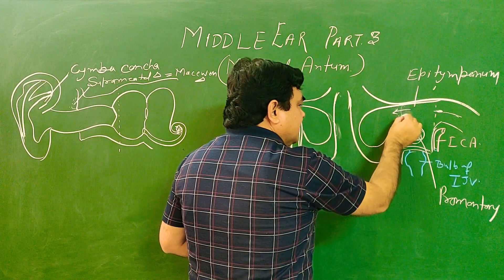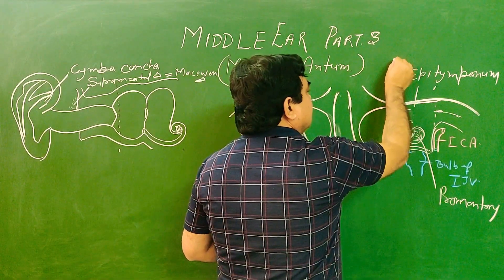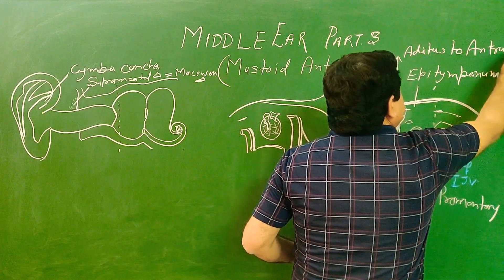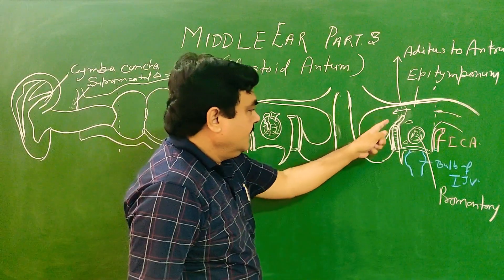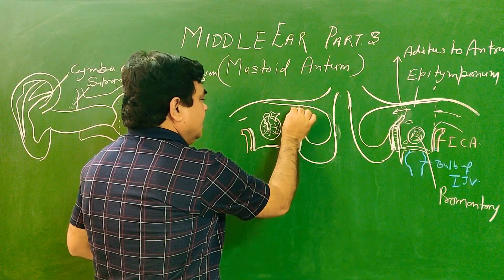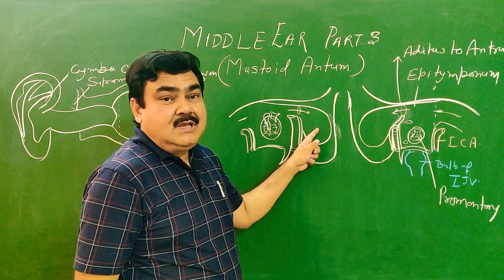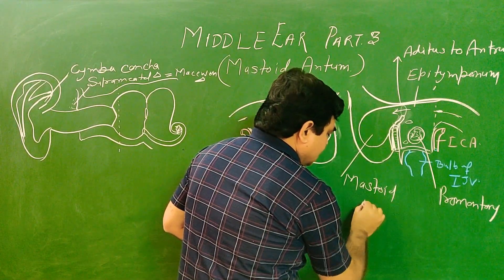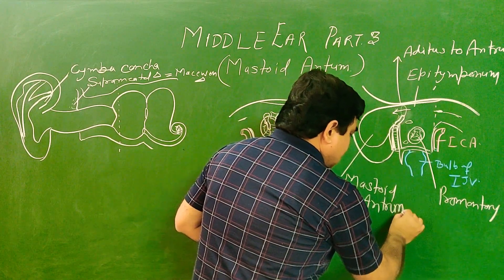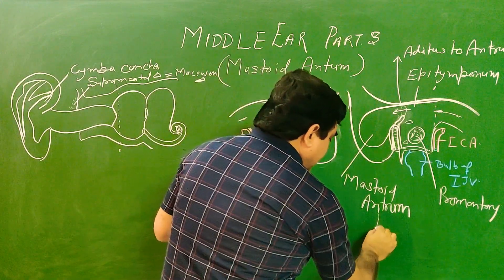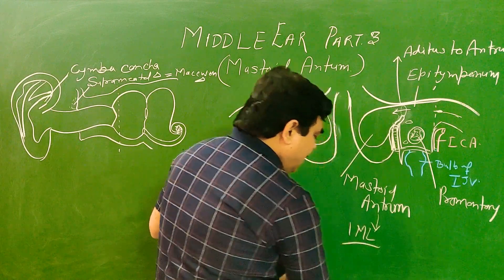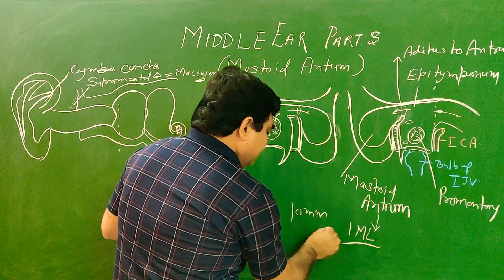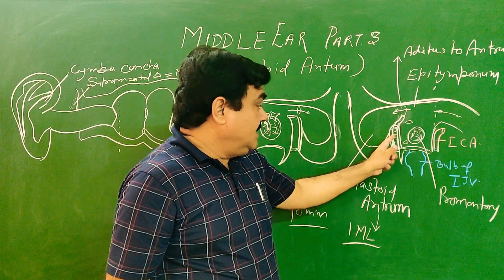This opening is known as the aditus to the antrum. Just at the antrum, through this opening, the middle ear cavity communicates with the mastoid antrum. The capacity of the mastoid antrum can be about one cubic centimeter.